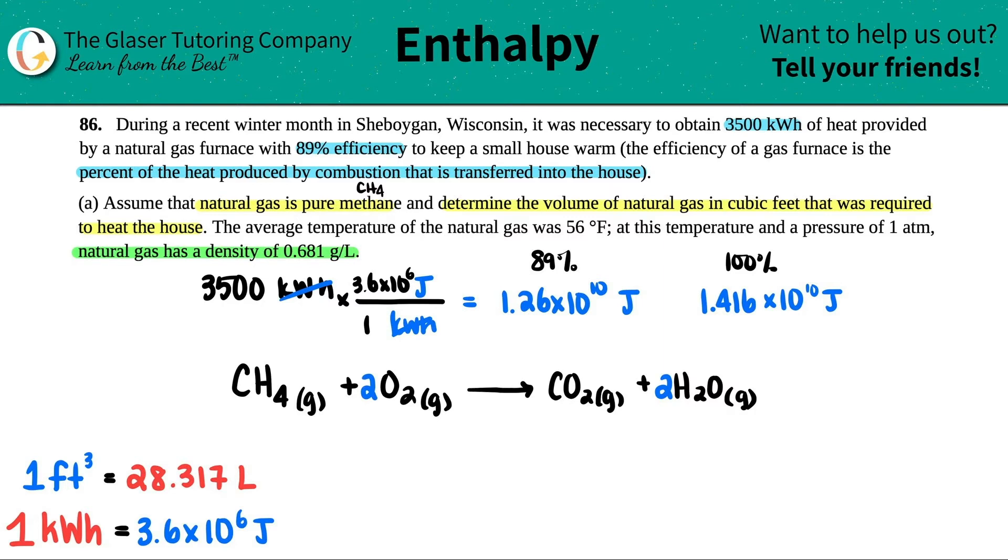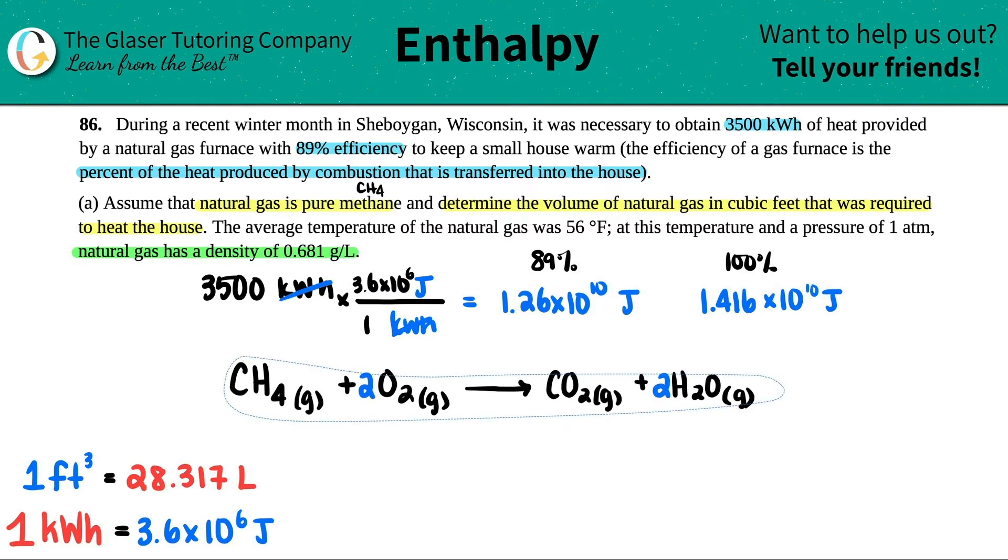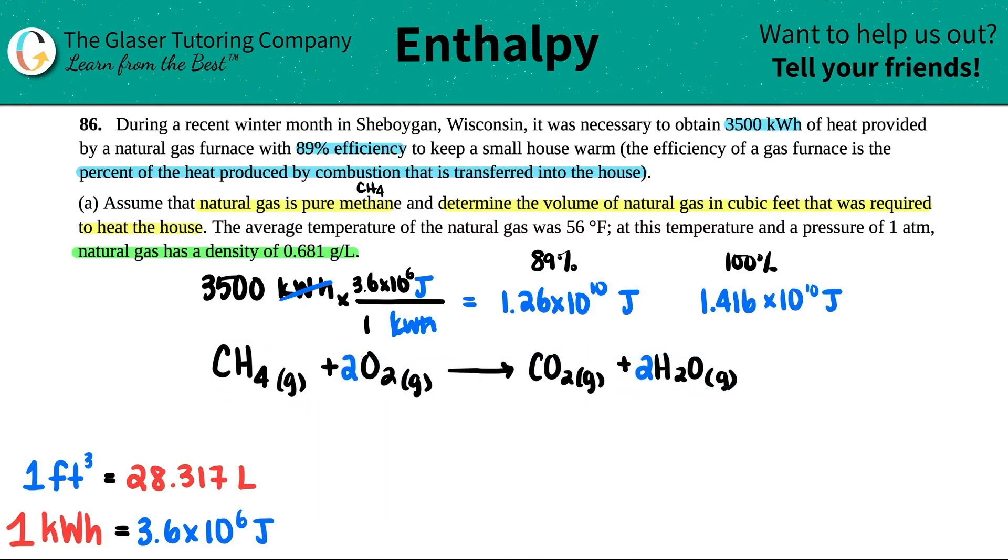To make this work, we need the delta H of this equation. We could go into the tables and do products minus reactants, but I looked up the delta H for this whole reaction. The heat produced is 890.8 kilojoules per mole, negative because it's exothermic and releasing heat.